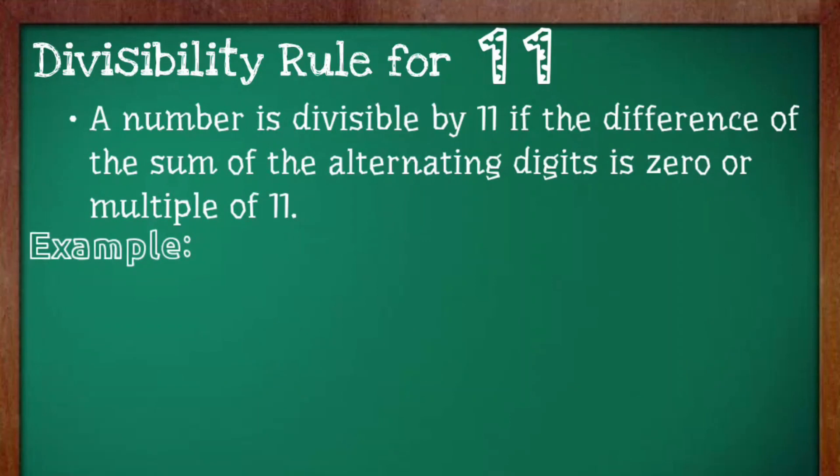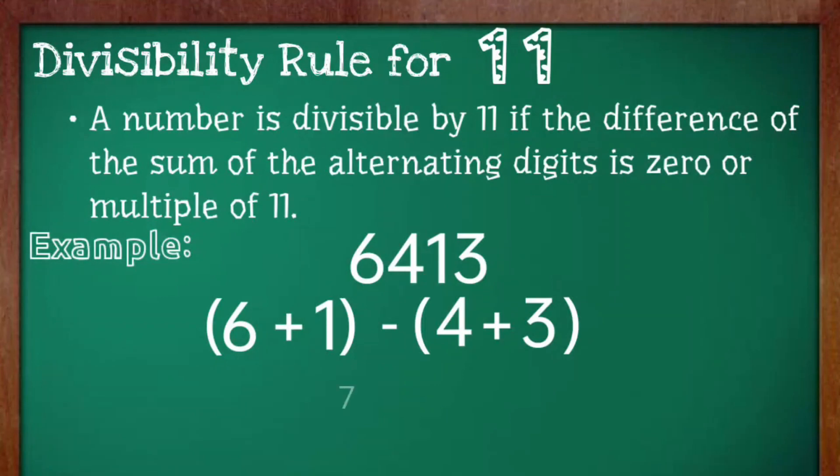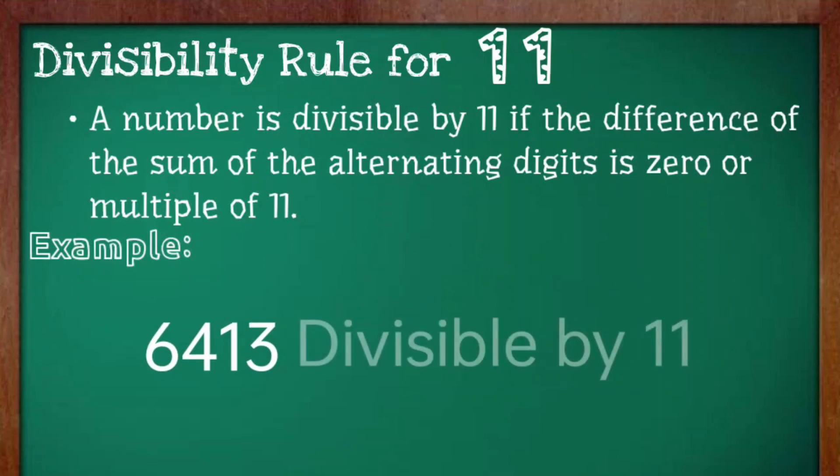Let's try another one: 6,413. This time, we have to add 6 and 1 and subtract it by the sum of 4 and 3. 6 plus 1 is equal to 7 minus 4 plus 3 is equal to 7. The result is 0, making 6,413 divisible by 11.